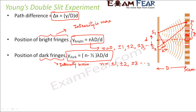When n equals ±1, that corresponds to the dark fringe located on either side of the central bright fringe. For n equals ±2, it gives the next dark fringe further out. As the value of n increases, the position of the dark fringe keeps changing accordingly.